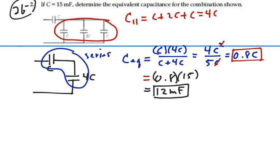So the equivalent capacitance of this network is 12 millifarads. We can represent it by just one capacitance of C equivalent equal to 12 millifarads. So that's our answer.